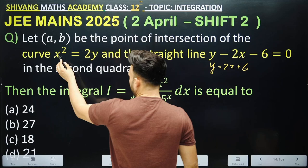Substituting -2 in place of a and 2 in place of b, the integral becomes ∫ from -2 to 2 of 9x²/(1 + 5^x) dx.